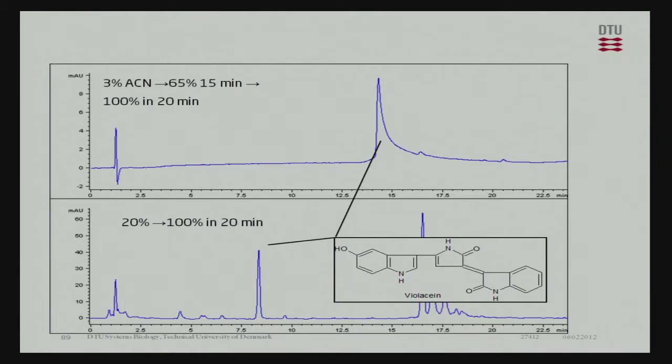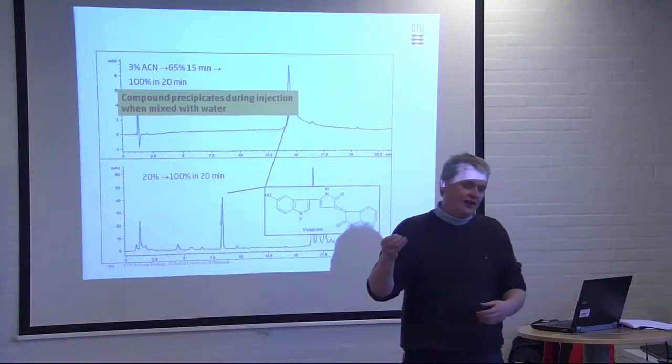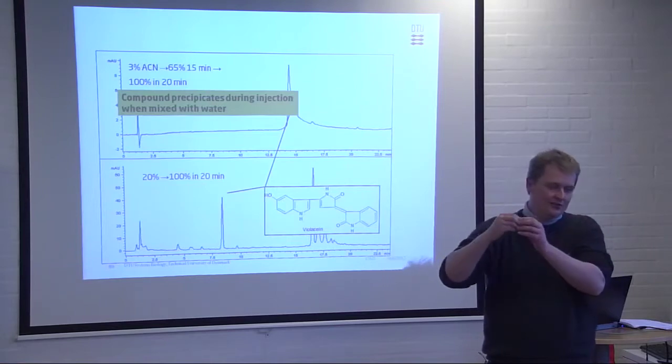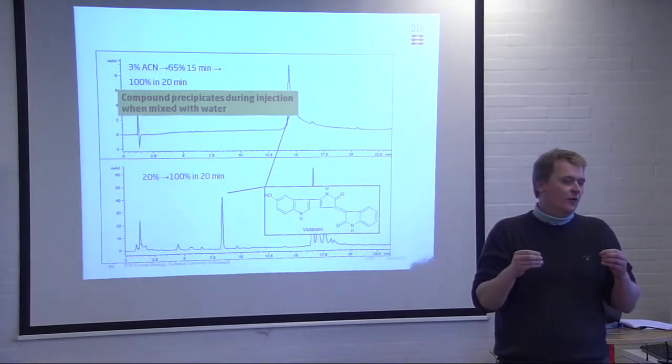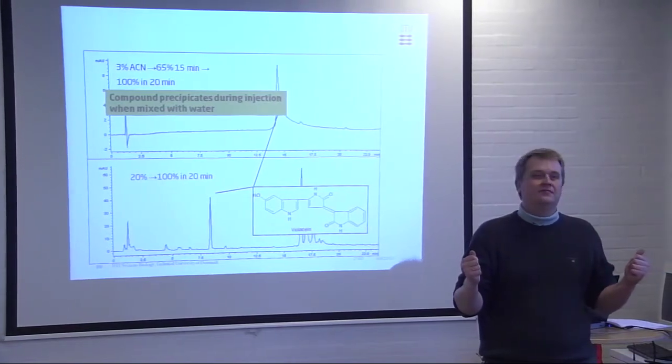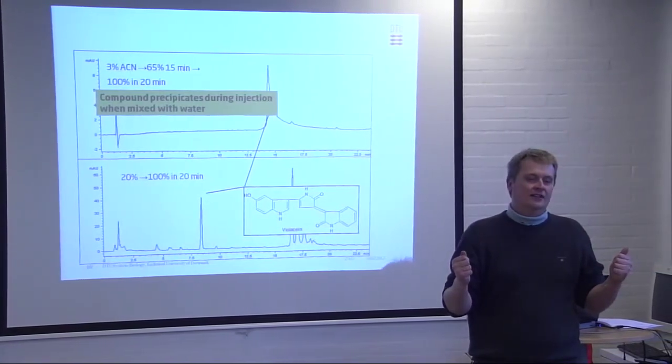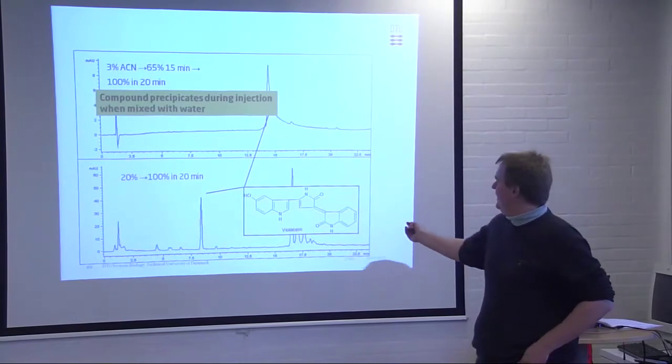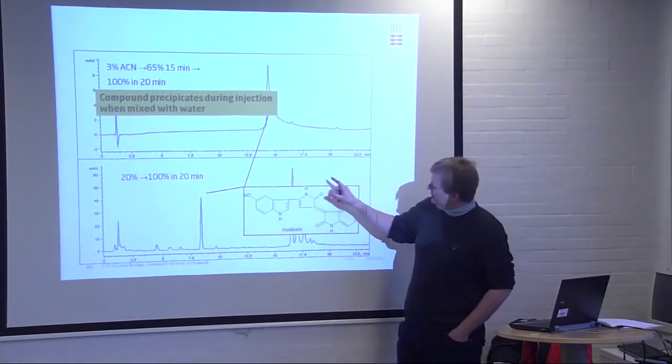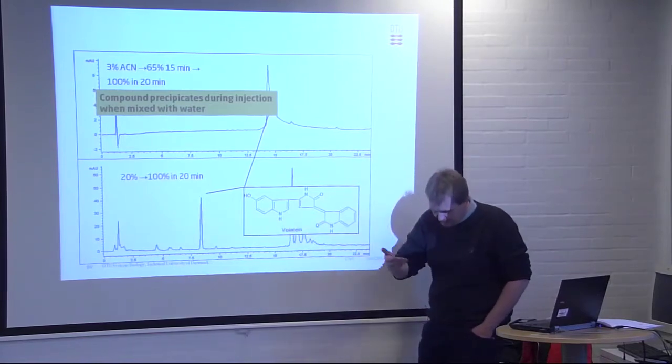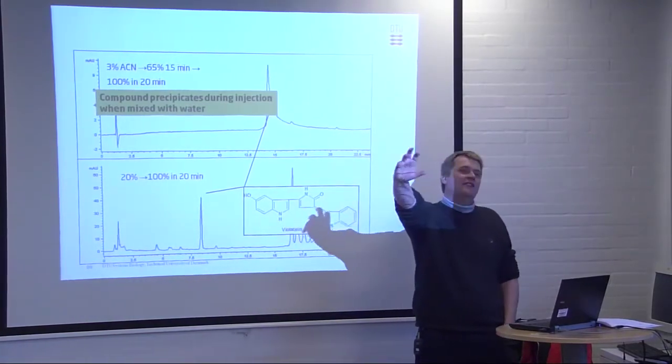So what happens here is that this compound, it's in the acetonitrile water, it comes into this small piece of tubing with water and it precipitates out. This is actually a lot of the blue bacteria that makes this, kind of makes it as an armor outside their cell membrane.